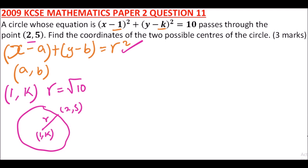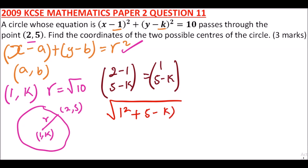And therefore we'll say that it is (2 - 1) and (5 - k), and this is going to give you 1 and (5 - k). So that is a column vector. To get the magnitude of this, we'll say that the square root of 1² + (5 - k)²,